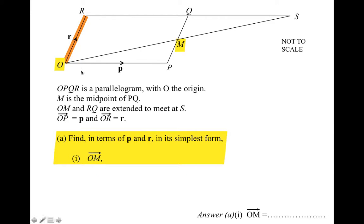For example, if we started by going from O to R, that would be a vector R. If we then went from R to Q, that would be a vector P because it's the same as the vector P at the bottom of the parallelogram, remembering that a parallelogram has equal and parallel pairs of sides.